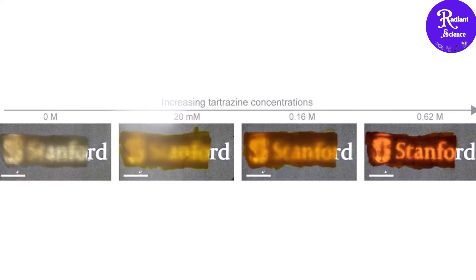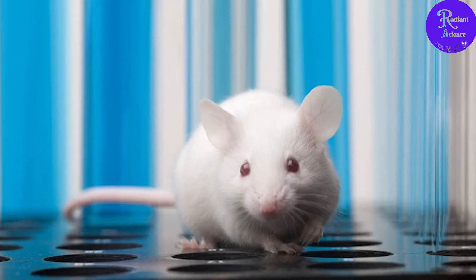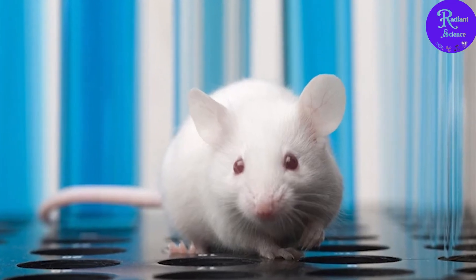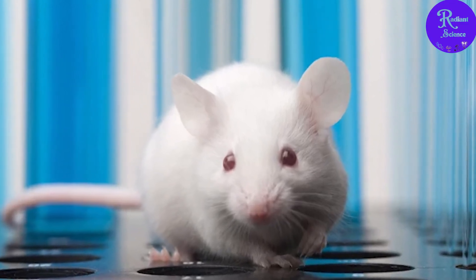So, how does it work? It's all about how light passes through our skin. Normally, skin and muscles are solid because they scatter light. The fats, proteins, and fluids in the skin bend light in different directions, making it hard to see through.